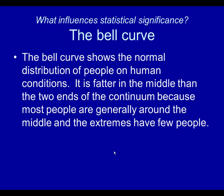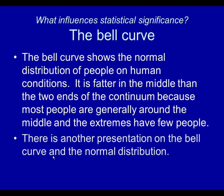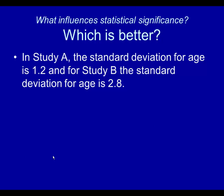The bell curve shows the normal distribution of people on human conditions. It is fatter in the middle than the two ends of the continuum because most people are generally around the middle and the extremes have few people. I have a different presentation on the bell curve and won't go into detail here. Which is better: in Study A the standard deviation for age is 1.2, and in Study B the standard deviation for age is 2.8? Study A is more likely to achieve statistical significance because the standard deviation is lower — there is less variance and more homogeneity.